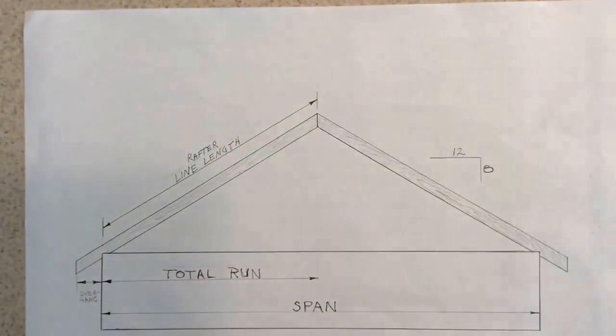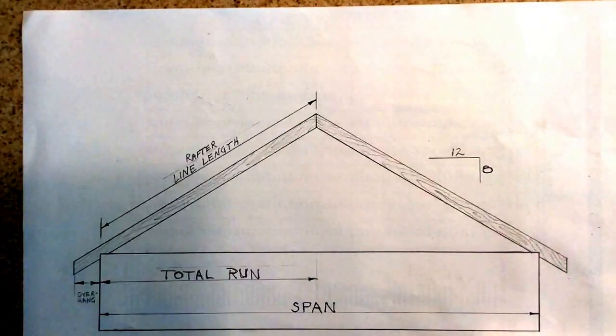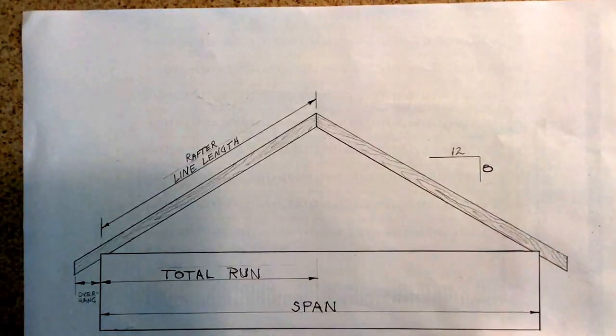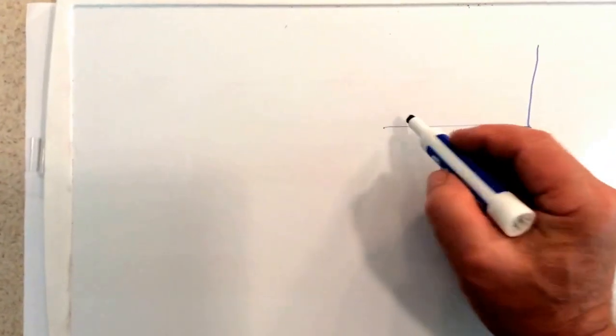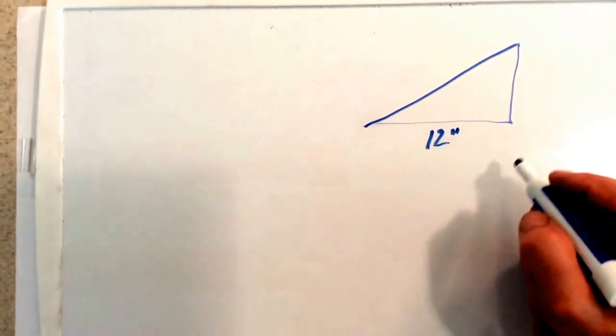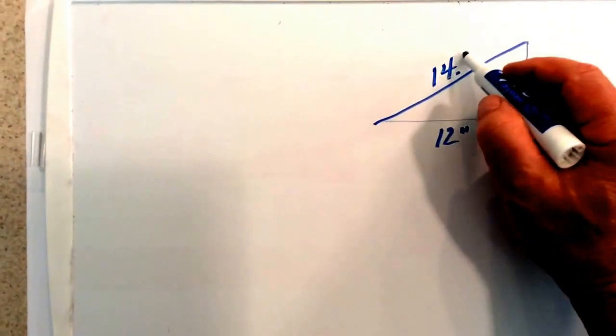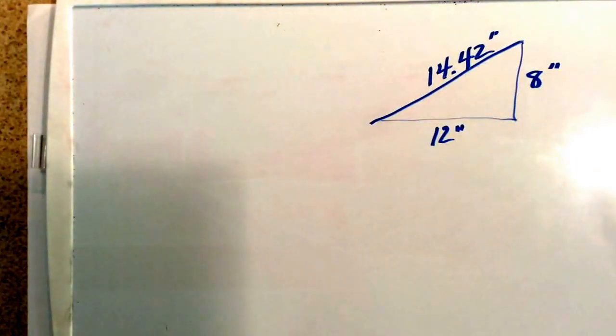That means for every foot of run, our rafter runs 14.42 inches. We can show that if this is my 12-inch run and 8-inch rise, this diagonal is 14.42 inches.